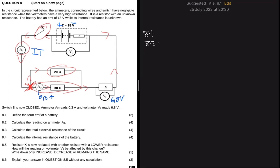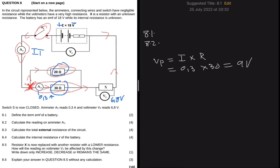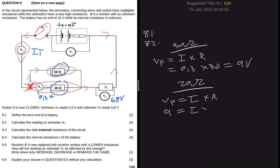Another portion of the current will go to the 30 ohm resistor. From our definitions, we know that in parallel the current is different but the voltage is the same. So V_parallel equals I multiplied by R. We calculate V_parallel using the 30 ohm resistor since we have both the current and resistance: that is 0.3 multiplied by 30, which gives 9 volts. So the 20 ohm resistor will also experience 9 volts. We can now write: V_parallel equals I multiplied by 20.